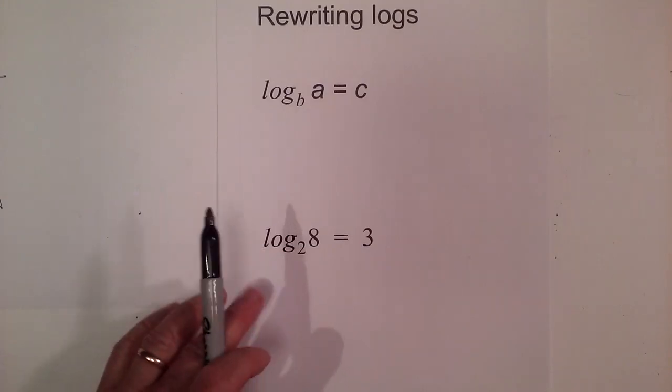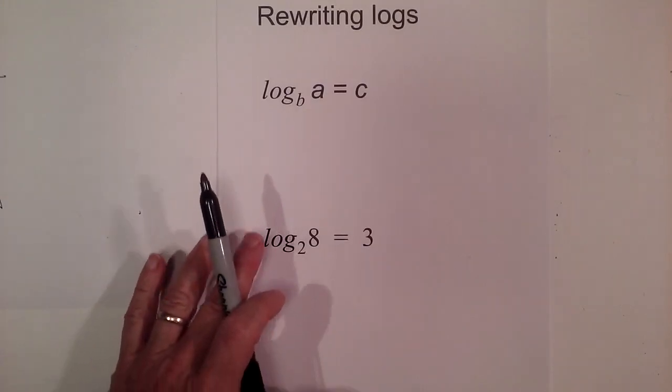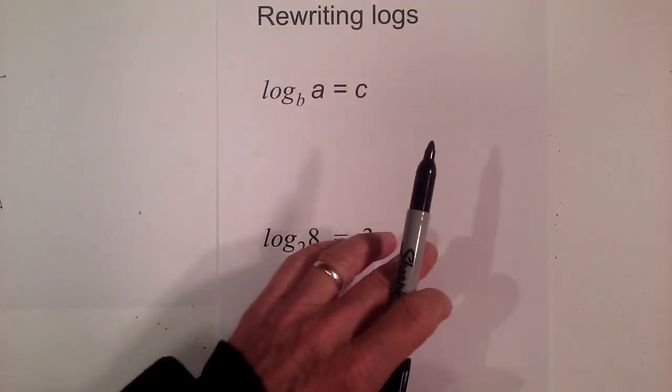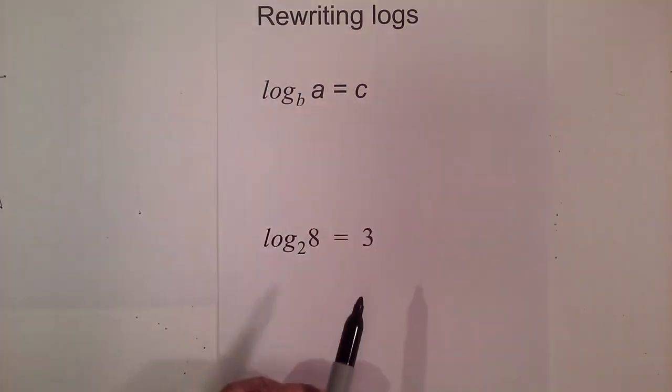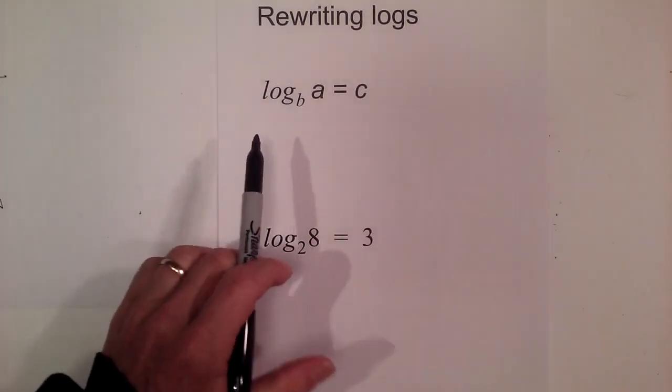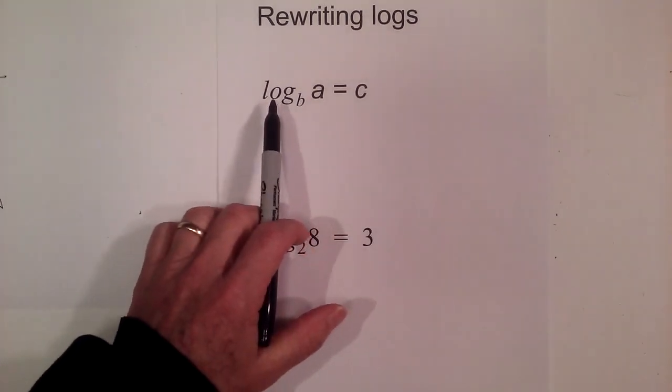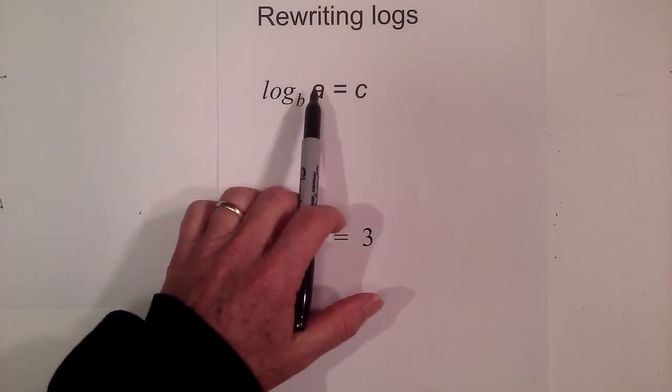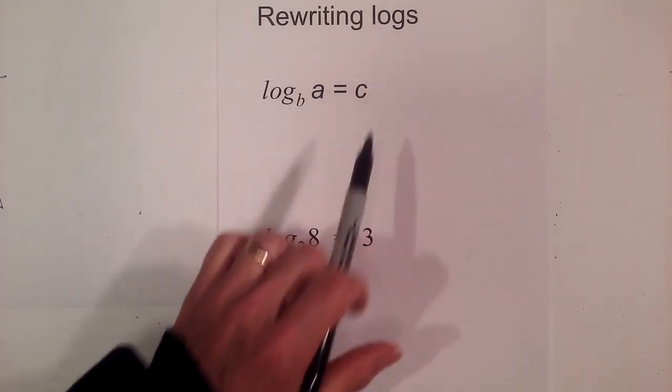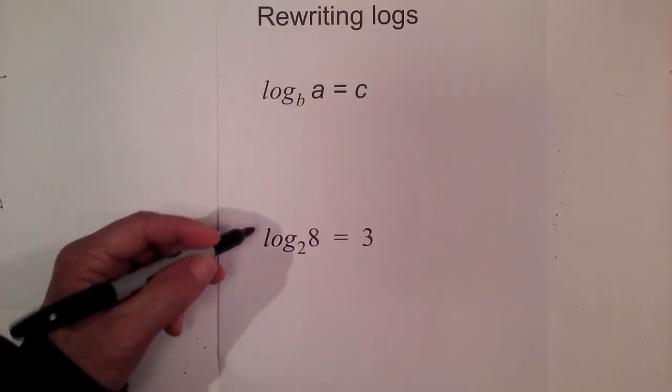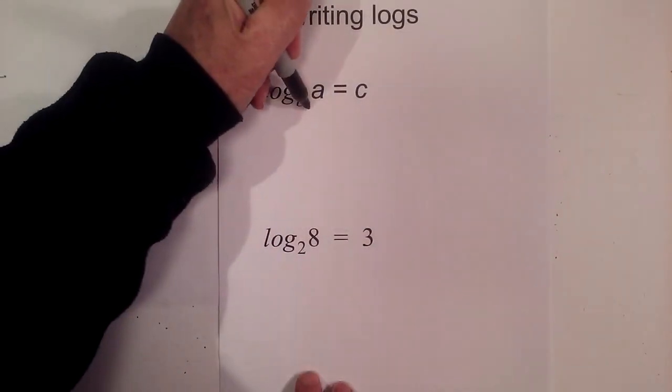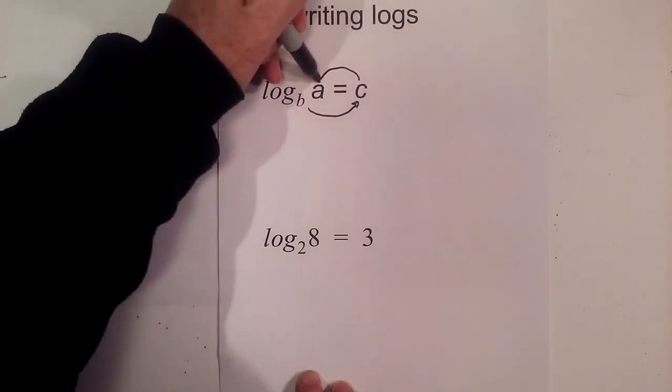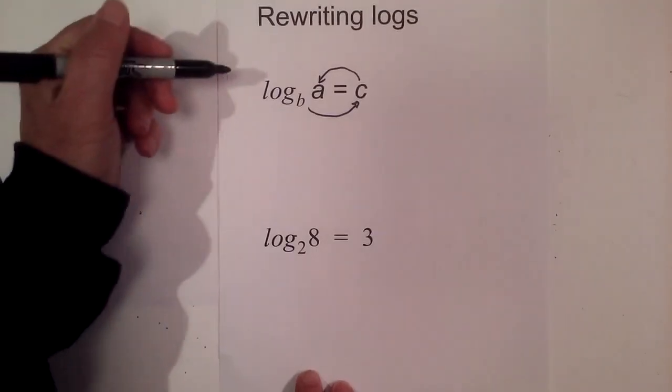In this video let's work on rewriting logs. We'll go from logarithmic form to exponential form and then from exponential form to logarithmic form. So let's first look at this: we have log base B of A equals C. Basically what we have is B raised to the C equals A. So I could rewrite this: B^C = A.